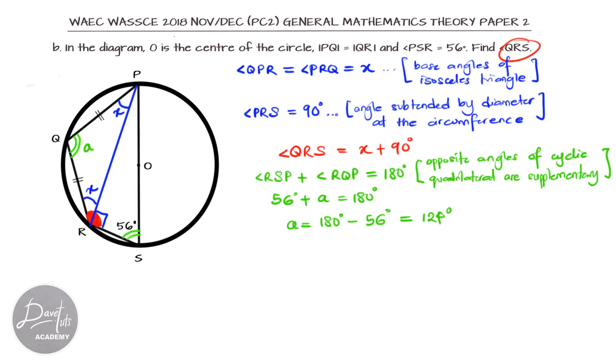But looking at the isosceles triangle, if we consider triangle QPR, we know that the sum of the angles of the triangle is 180 degrees, so A plus the 2X, they are going to give us 180 degrees, because the sum of angles of a triangle is 180. So, we can solve for X from here.